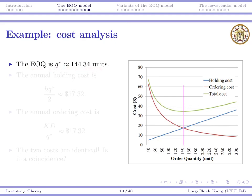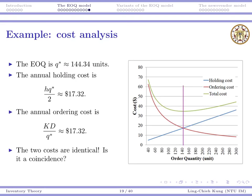Let's do cost analysis. The EOQ is around 145 units. The annual holding cost under the optimal solution is around $17.32, and the annual ordering cost is again around $17.32. The two costs are identical. On the graph, this is the lowest point, the global minimum of the total cost, and it's also the intersection of ordering and holding costs. Is it a coincidence or will it always be true?